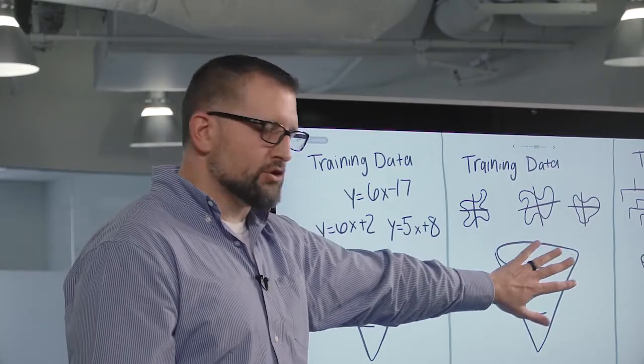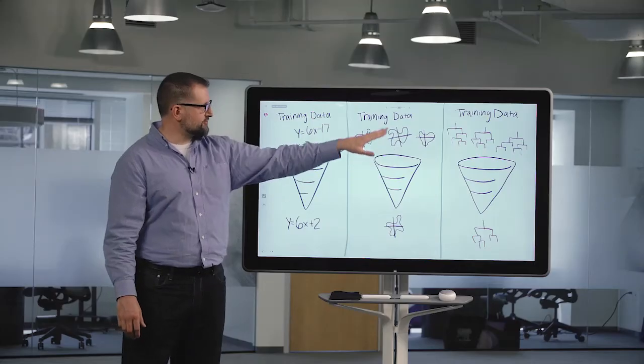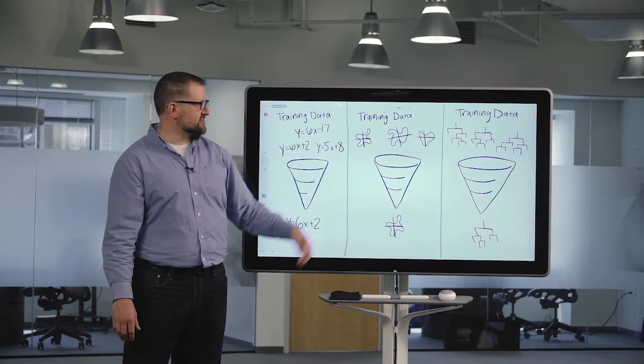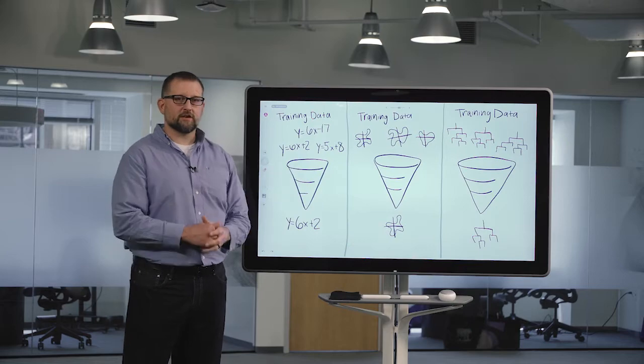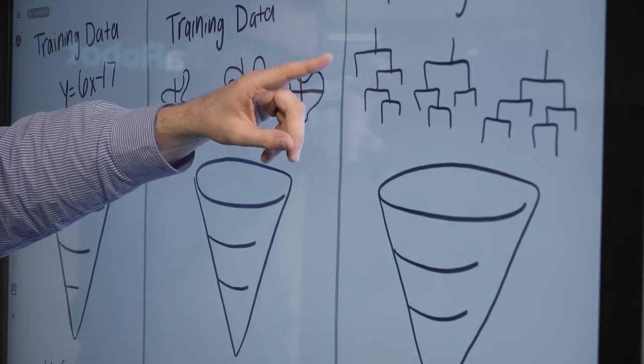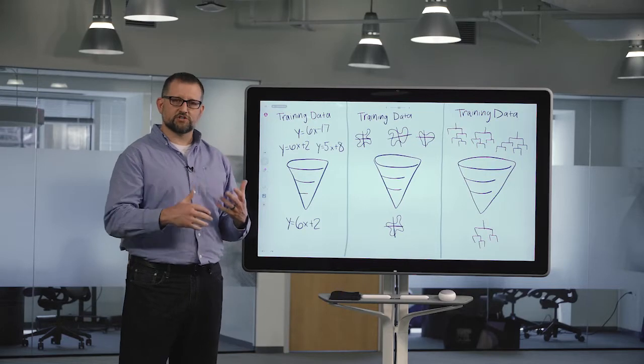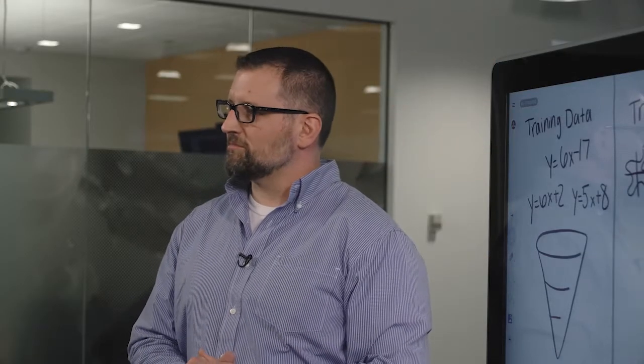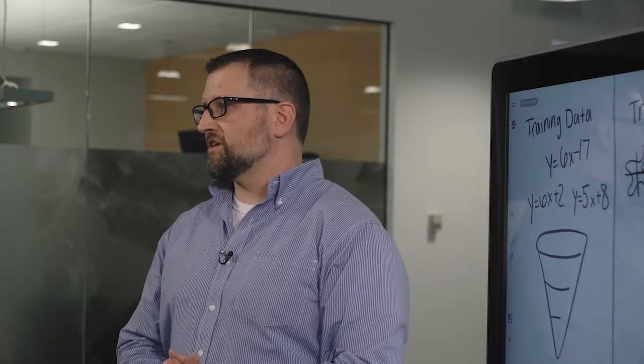We're going to take the training data and put it into an algorithm here and it's going to search through a bunch of candidate support vector machine models again in a very sophisticated way and it's going to find one that fits that data the best. Tree-based algorithm, same thing. We're going to take our training data, put it into an algorithm that's going to search in a very sophisticated way through a bunch of different possible tree-based models and it's going to return the one that fits the training data the best.